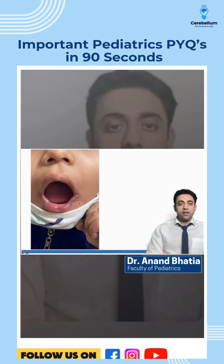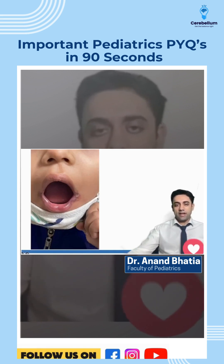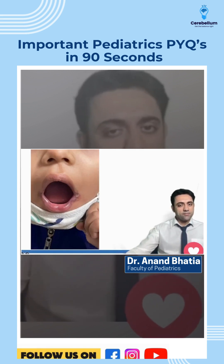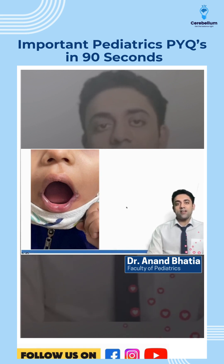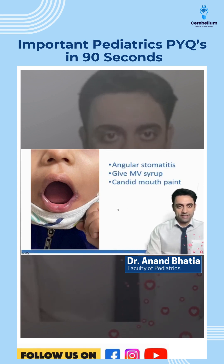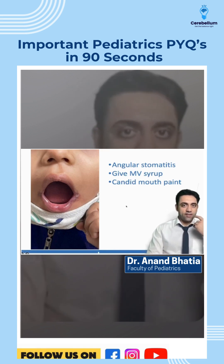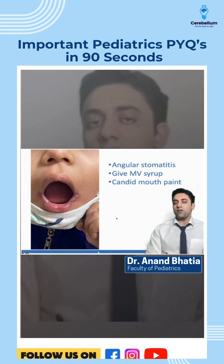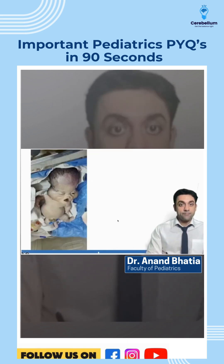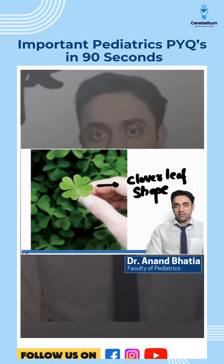Point number two: the angle of the mouth of the baby has some lesions. What is this? This is chelitis, or angular stomatitis — basically, inflammation at the angle of the mouth due to multivitamin or iron deficiency.